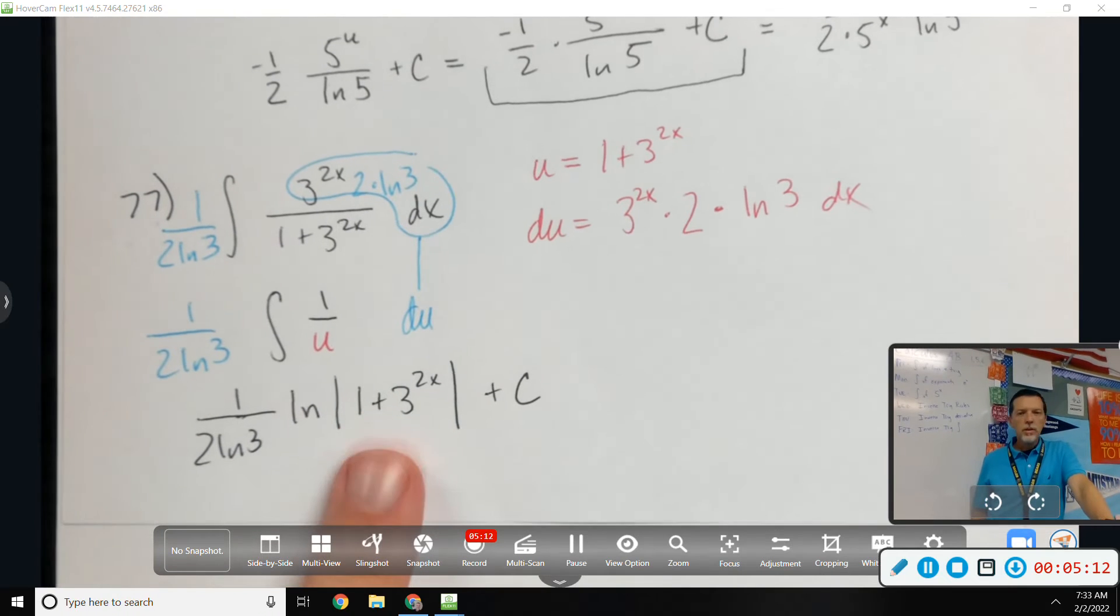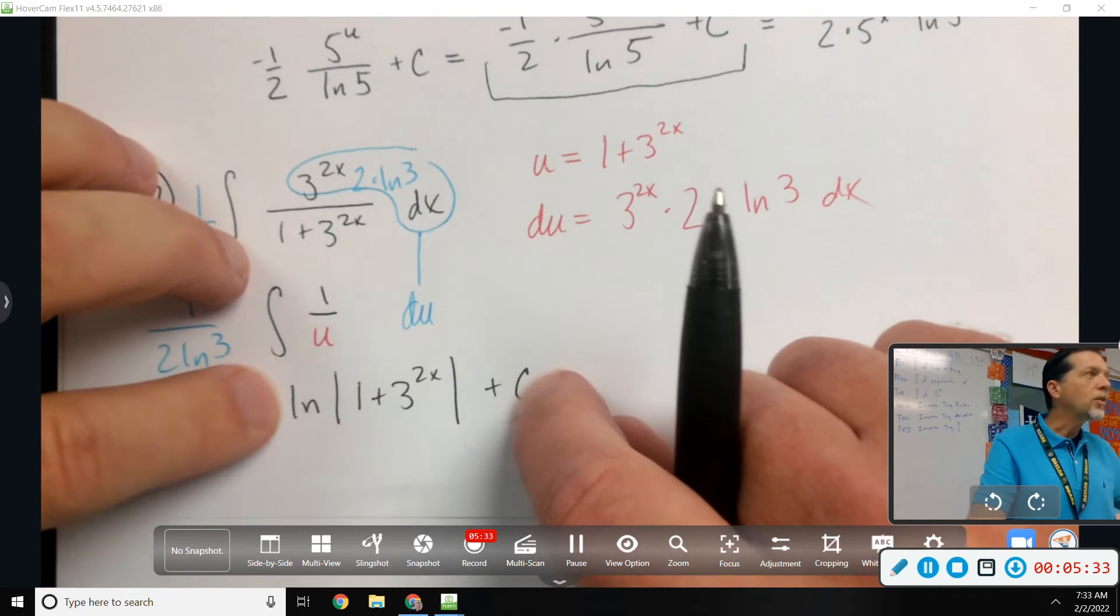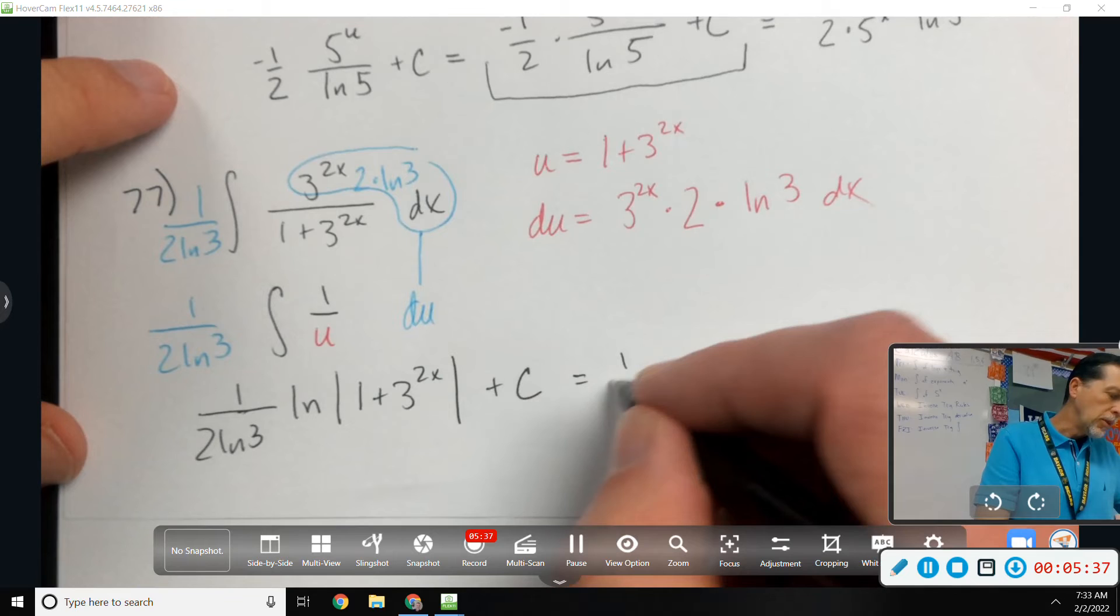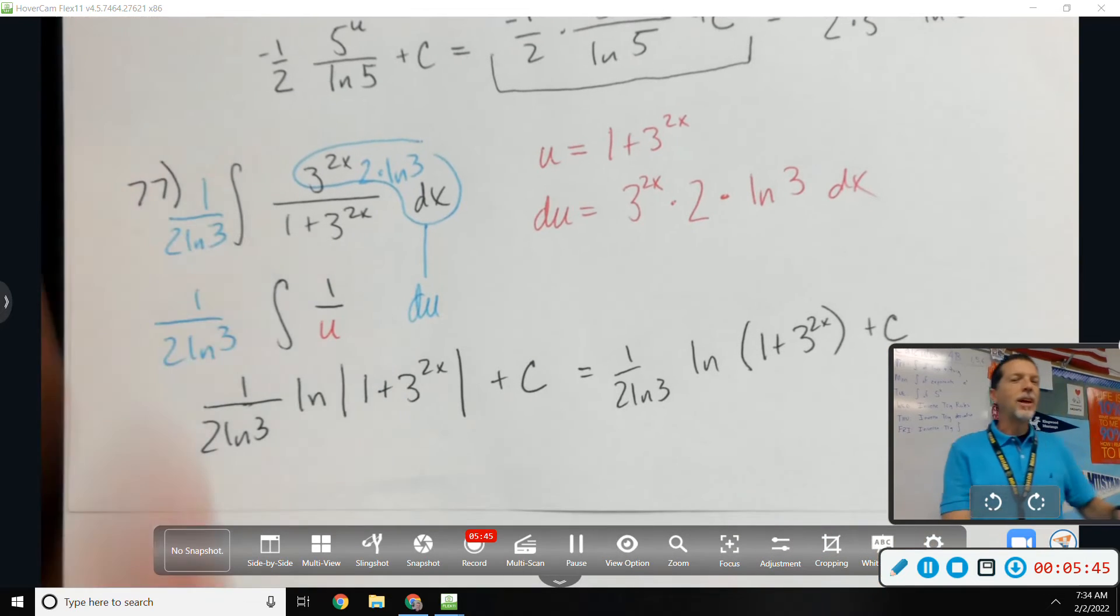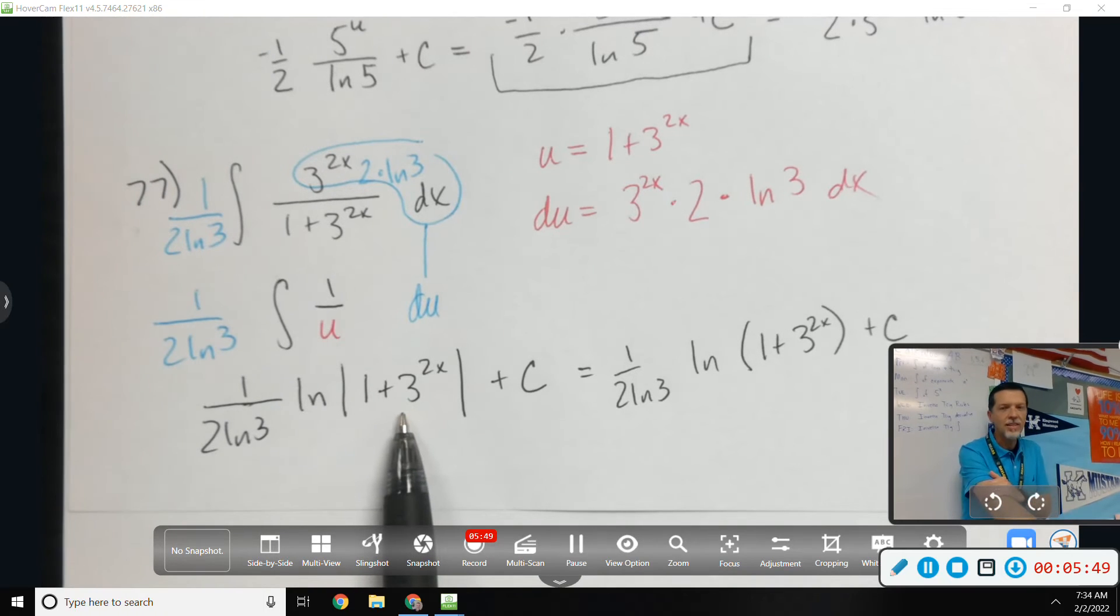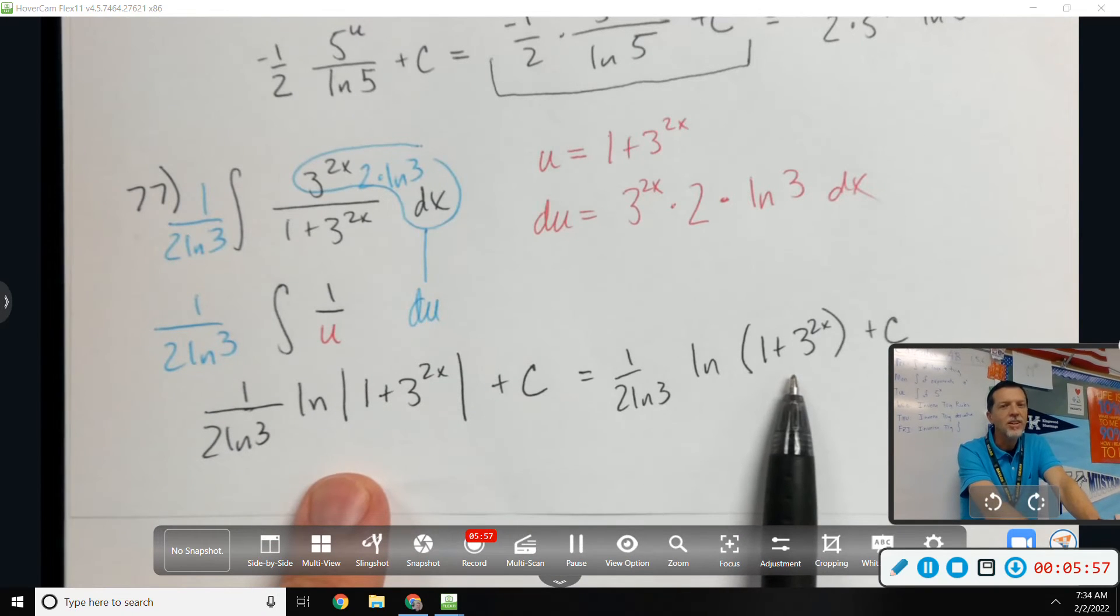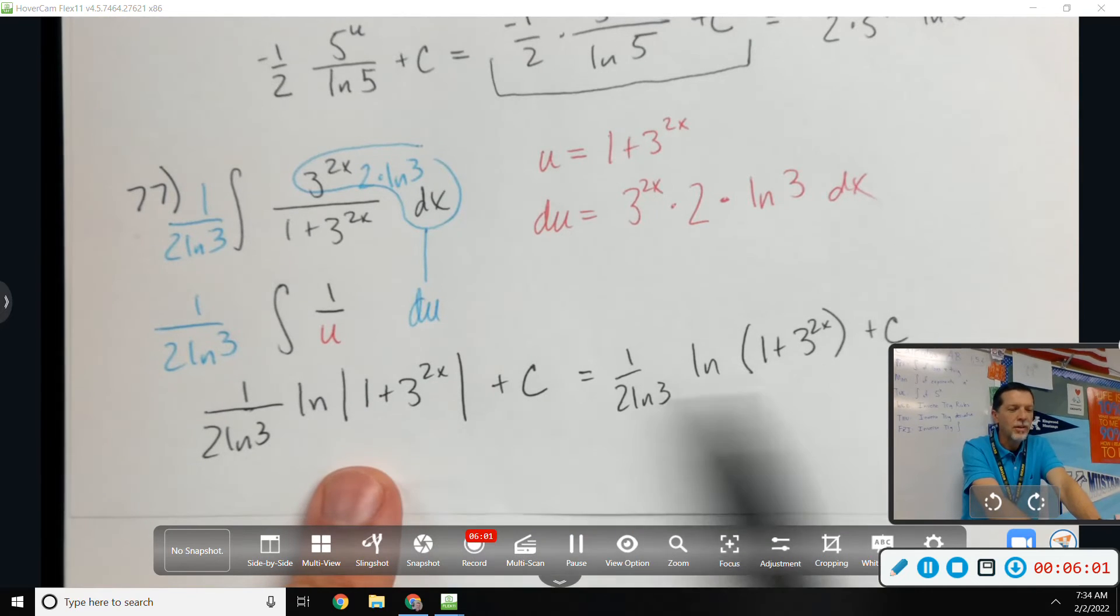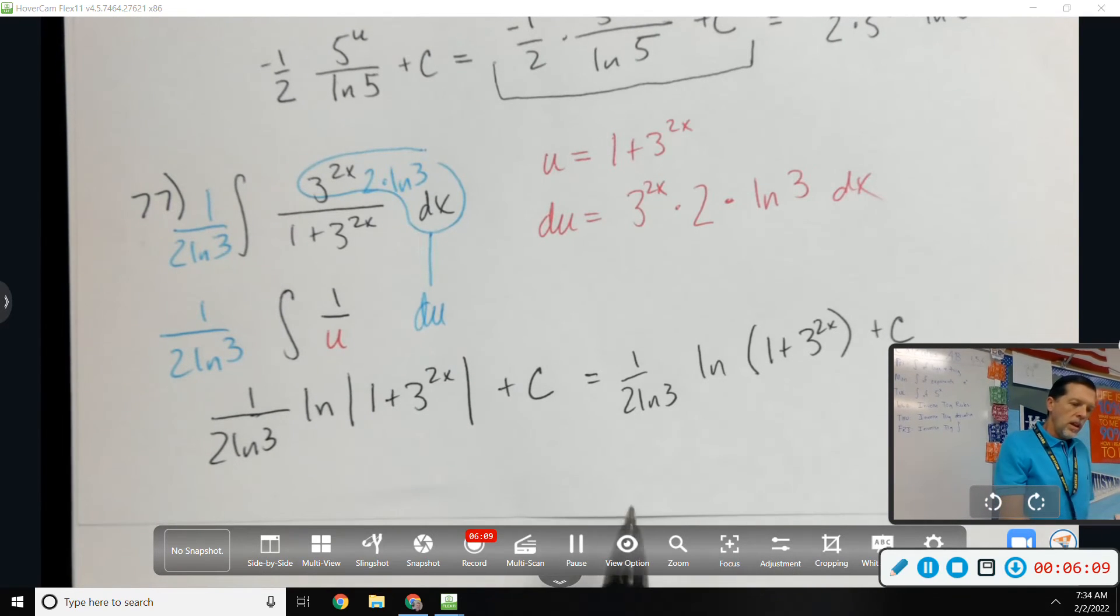I think that would be another one where we don't need the absolute value because 1 plus 3 to the 2x is always positive, but it wouldn't be wrong to have it. Student asks about the absolute value. Teacher: What's inside of that is always positive, so you don't need the absolute value bars. On a multiple choice test, they like to do that when they can. But it would not be wrong to leave it like this. And if it's on a multiple choice test, they're not going to give both answers because they're both correct.